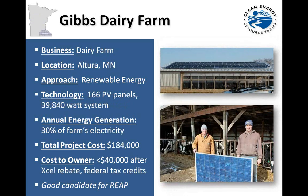Here we have Gibbs Dairy Farm, located in Altura, Minnesota, with a renewable energy approach. The system consists of 166 photovoltaic panels for a total of 39,840 watts. Minnesota has a 40-kilowatt net metering cap for rural electric cooperatives and municipalities. The annual energy generation is approximately 30% of the farmer's electricity, illustrating that dairy farmers use a lot of energy. The total project cost was $184,000, and the cost to the owner was less than $40,000 after Excel Solar Rewards rebates and federal tax credits. This would have been a great candidate for REAP.